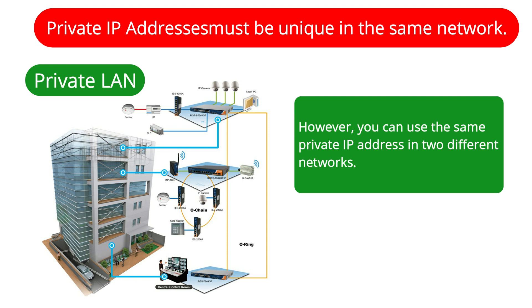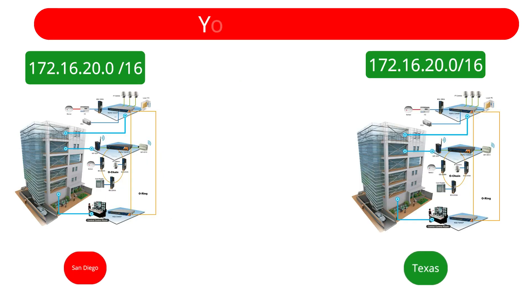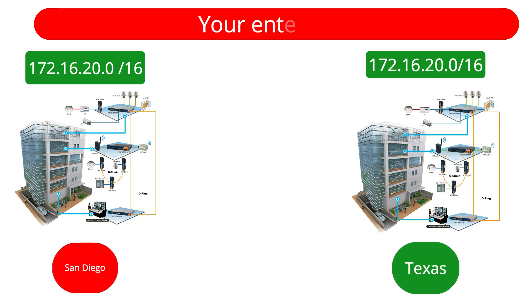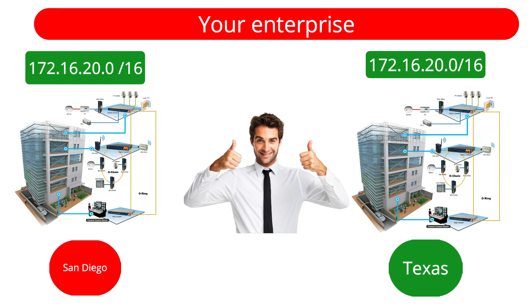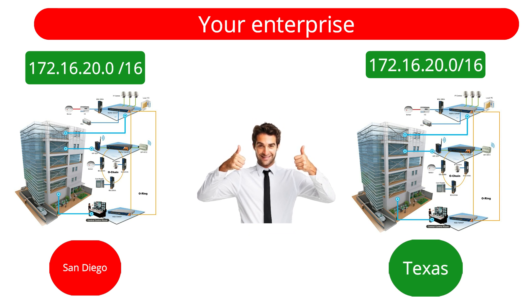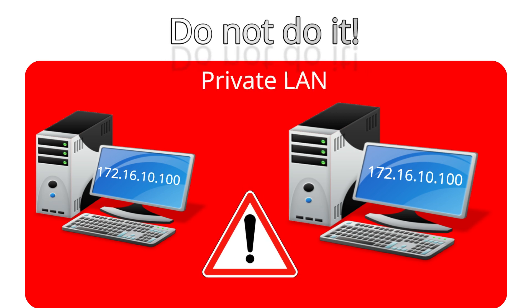For example, imagine that you are the owner of an enterprise that has two offices in two different cities. You design, configure, and install an internal network in each office. In the first office, you use a certain IP address for its internal network. Then in the second office, you use the same IP address. It's not only possible but real to use the same IP address in different internal networks, and that is what really happens in the real world. Thousands or even millions of enterprises use the same private IP addresses in their internal networks.